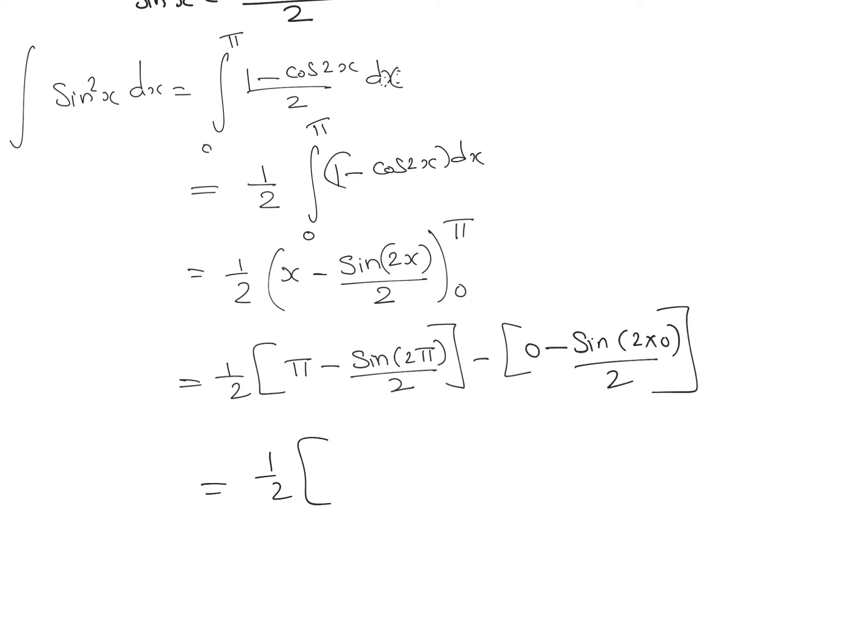This gives (1/2) times [π - sin 2π/2]. Since π is 180 degrees, 2π is 360 degrees, and sin 360° is 0, that will be 0.